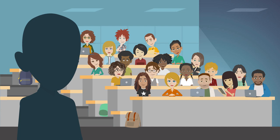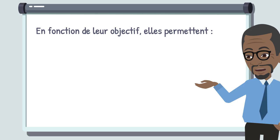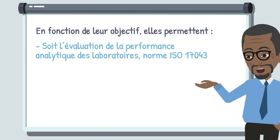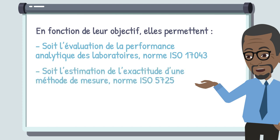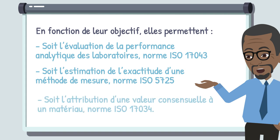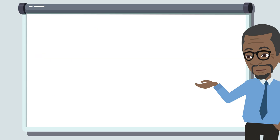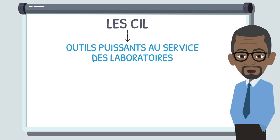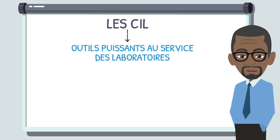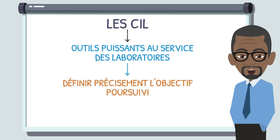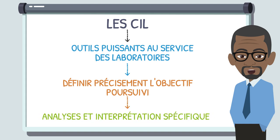In conclusion, PTS cannot be used to do everything. Depending on their purpose, they can be used: to assess the analytical proficiency of laboratories — standard ISO 17043; to estimate the accuracy of a measurement method — standard ISO 5725; to assign a consensus value to a material — standard ISO 17034. PTS represent powerful tools available to laboratories, but they require a precise definition of their purposes in order to justify the analyses performed and their specific interpretation.